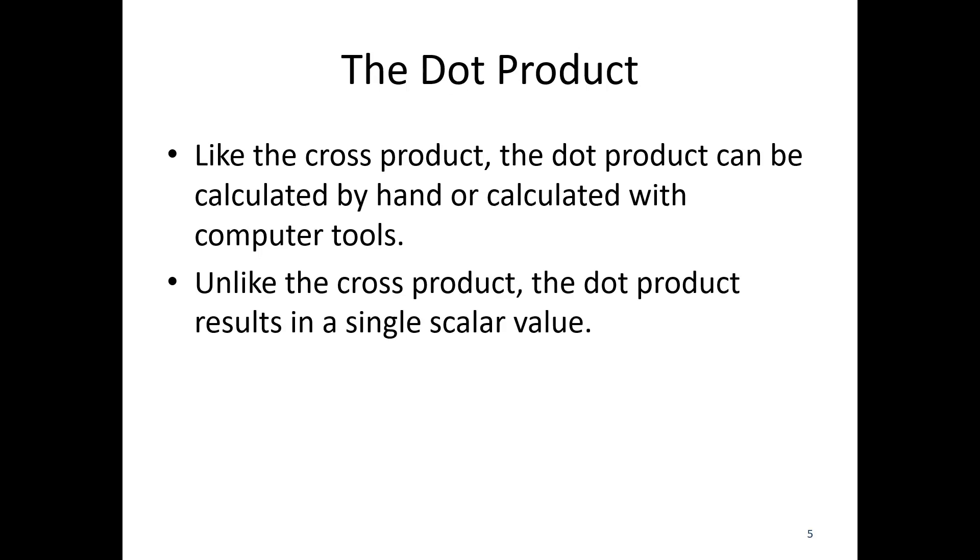Unlike the cross product, the dot product results in a single scalar value. You might have noticed that the moment, the M in my equation, did not have an arrow over it. That's because M is going to be a single value, a magnitude without a direction.